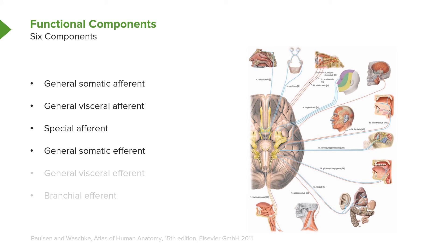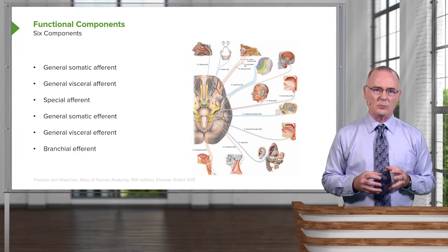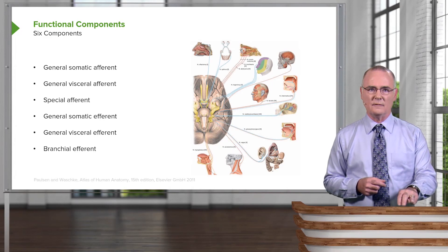Then we have general somatic efferent nerve fibers. These are going to innervate skeletal muscle. We also have, for your consideration, general visceral efferents. These are going to innervate glands, smooth muscle, and cardiac muscle. Then the last functional component will be found in cranial nerves that innervate the pharyngeal arches — these would be branchial efferent nerve fibers.